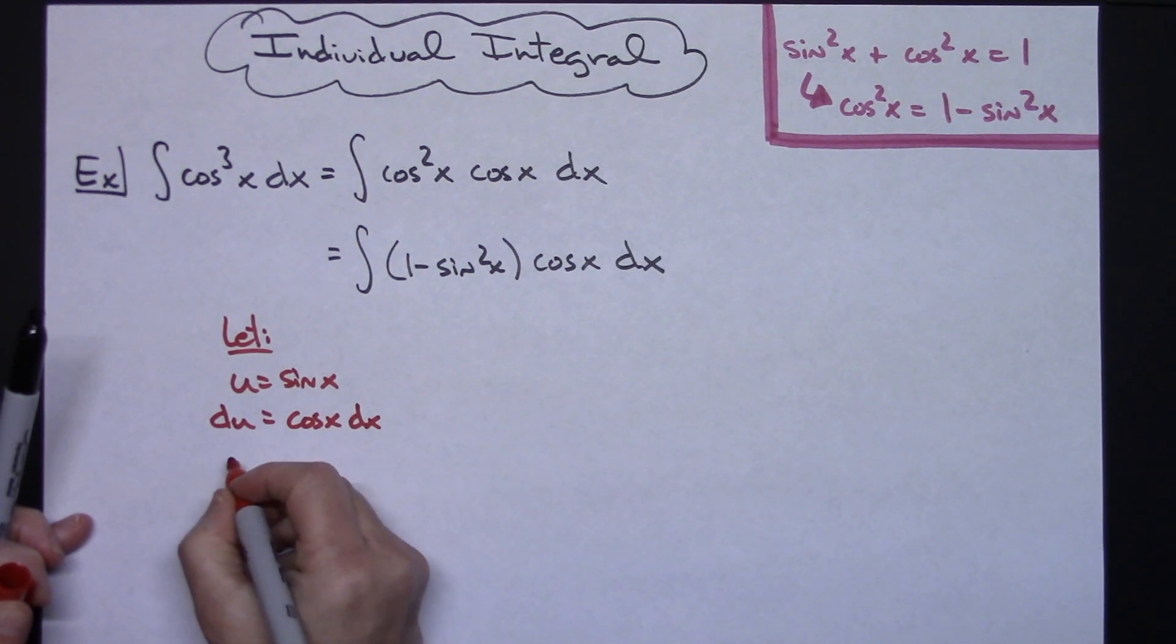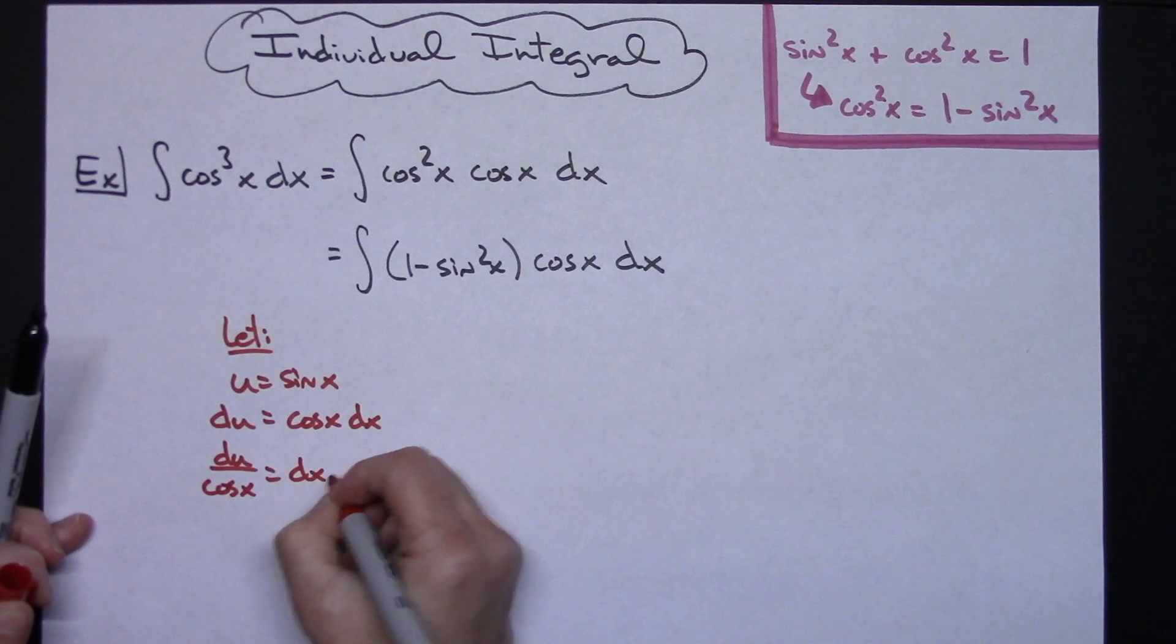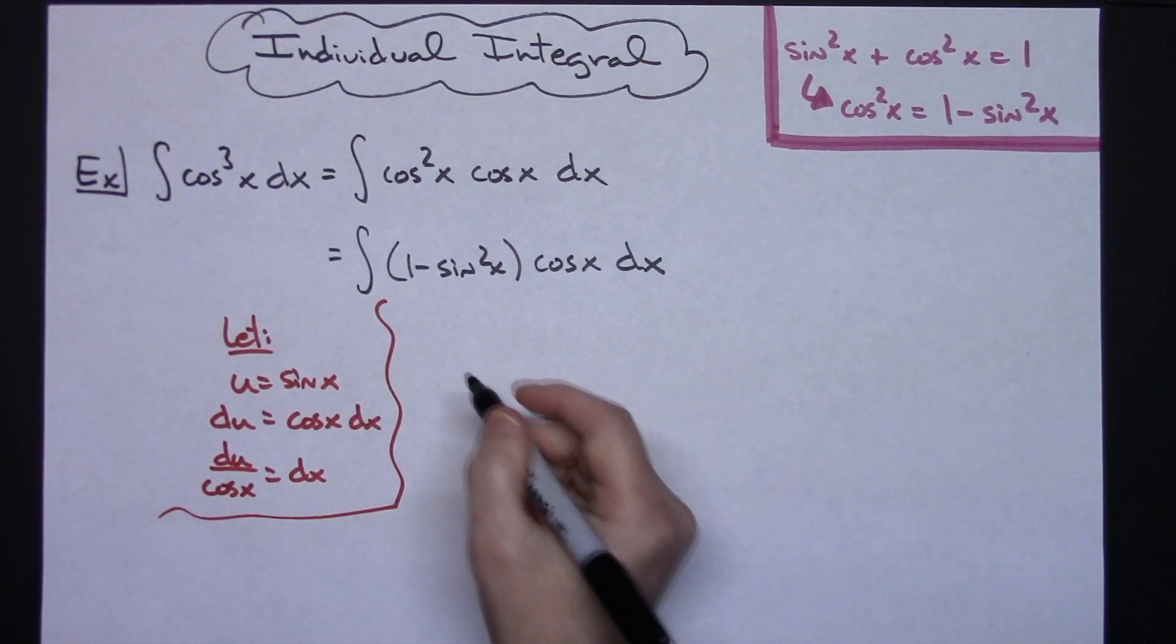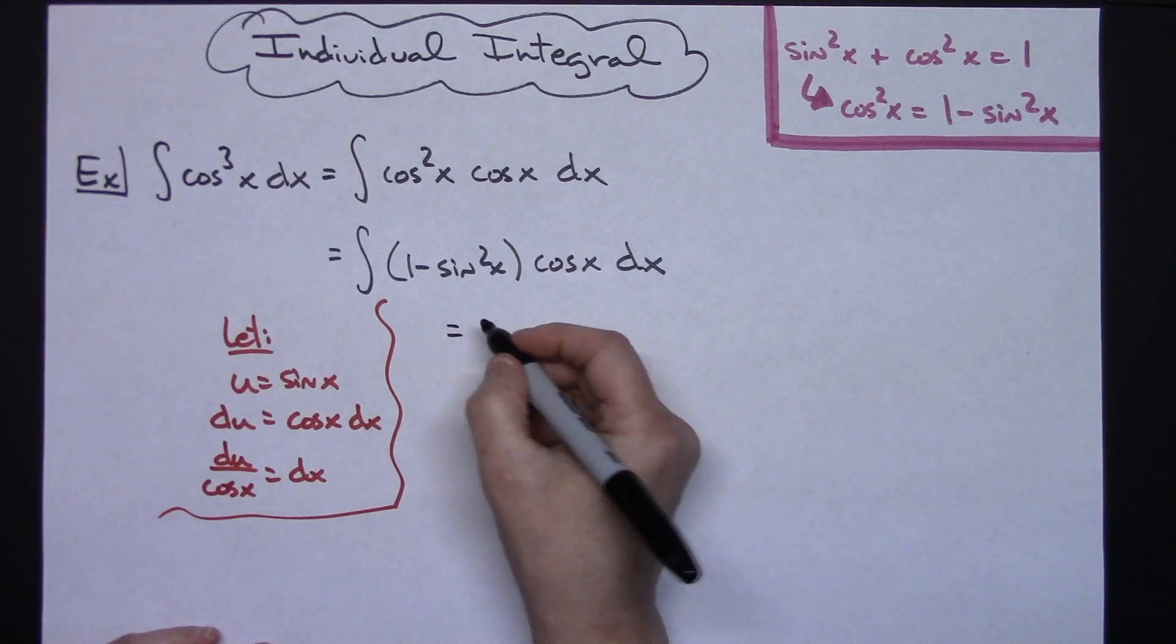If I solve for dx I'll have du over cosine x is equal to dx. Okay so we'll come back up here to this integral and we will do some substitutions.